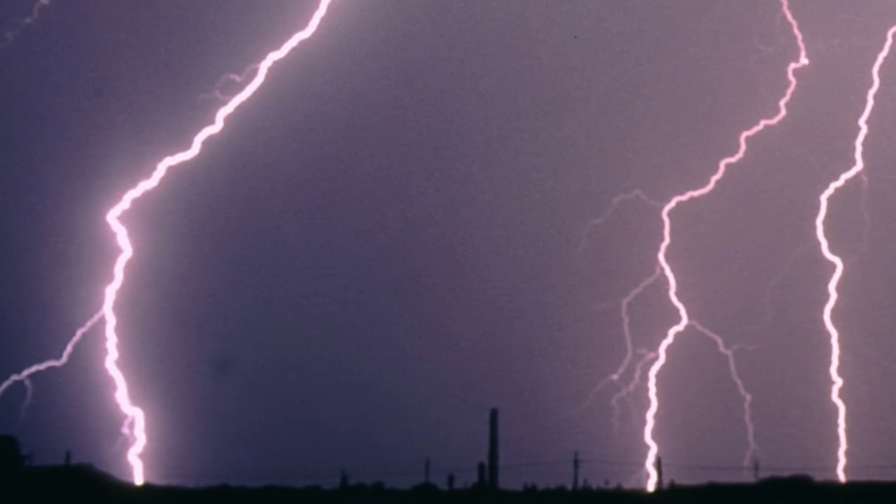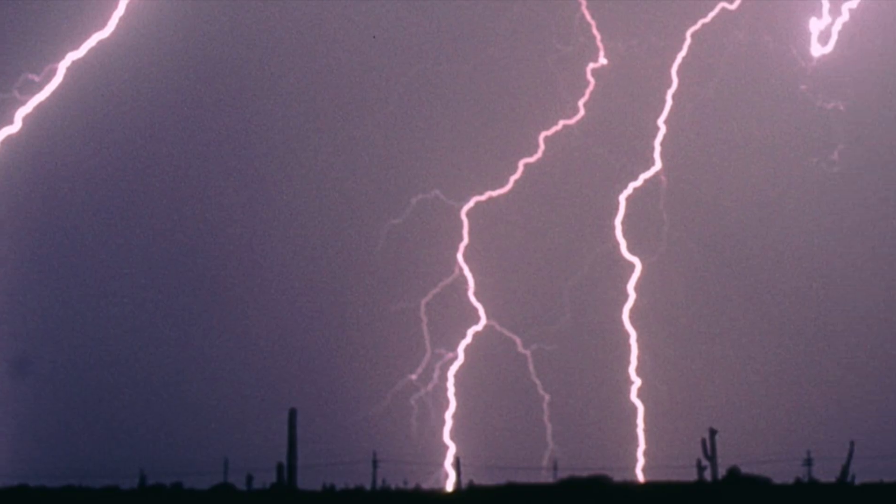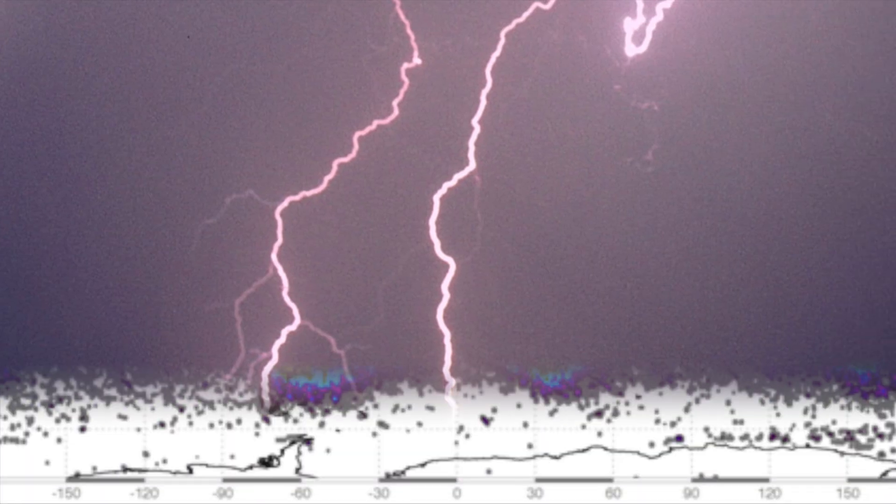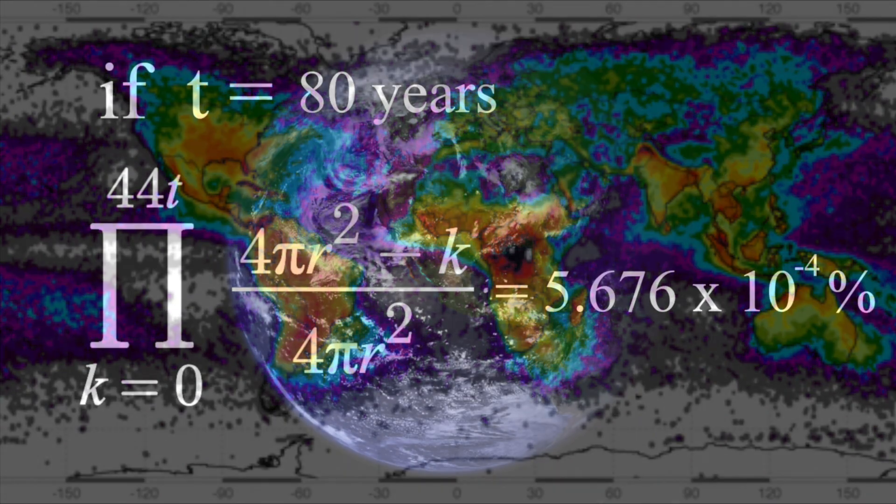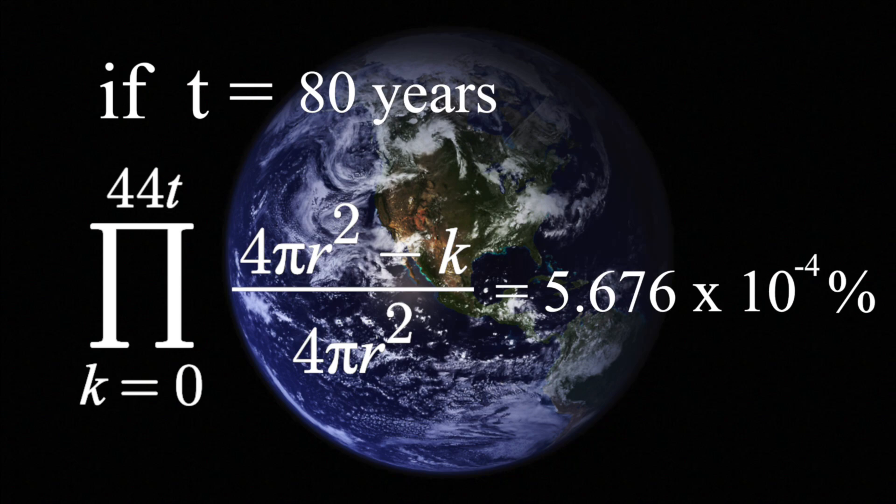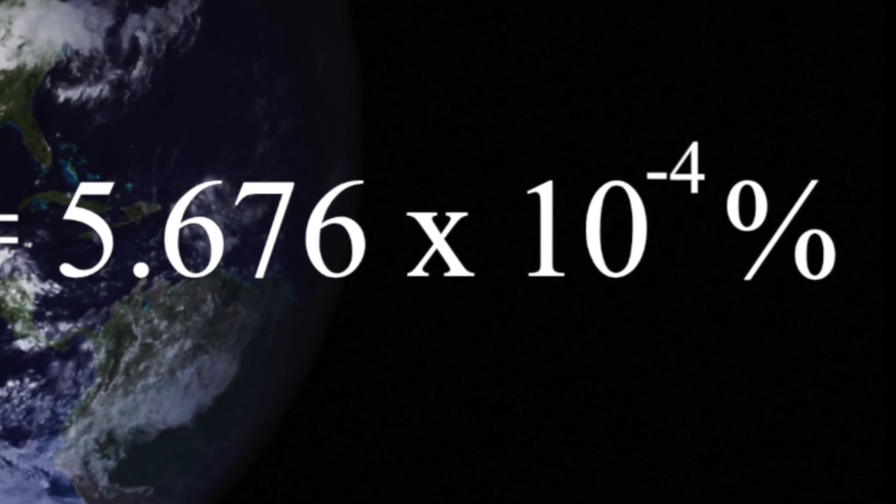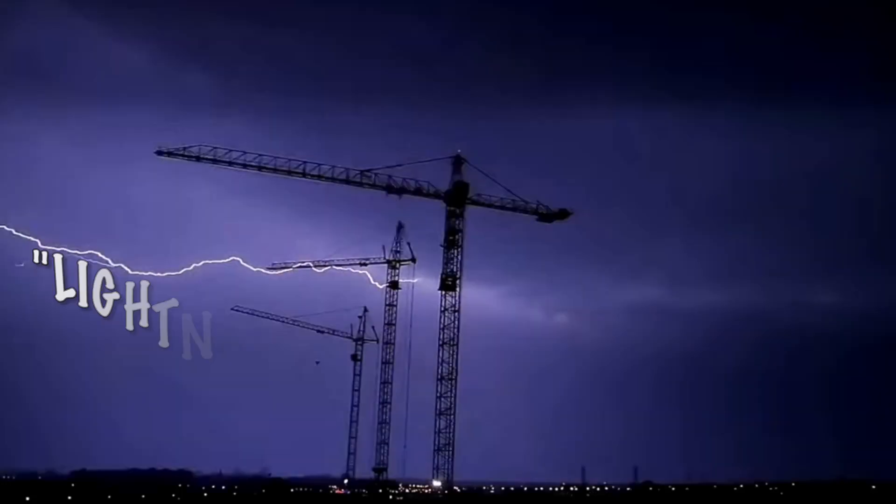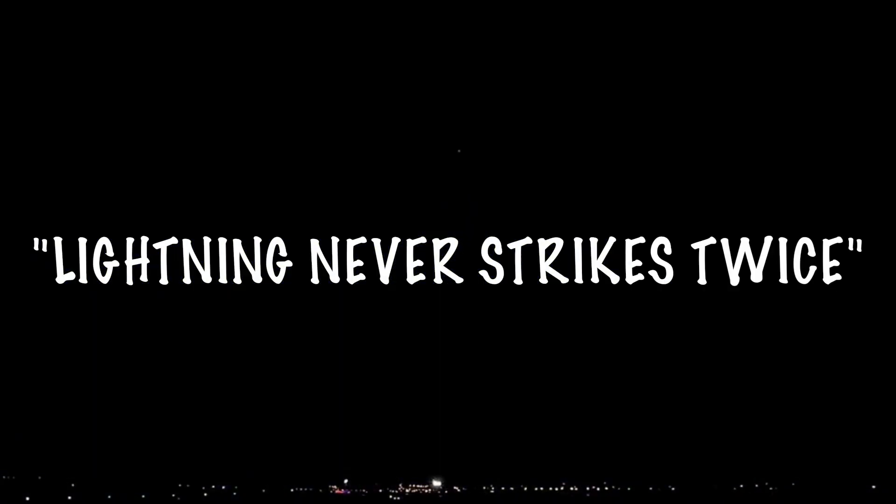And remember, that's all assuming that lightning strikes are perfectly random, which they're not. All of the probabilities that we've talked about thus far are really quite a bit smaller. Lightning is always striking the same place twice. And so I rest my case that lightning never strikes the same place twice is mathematically a horrible idiom.